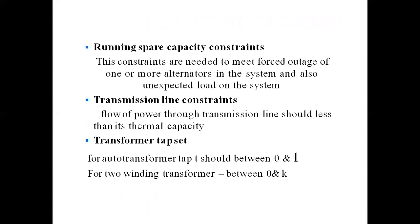There are running spare capacity constraints. These constraints are needed to meet forced outage of one or more alternators in the system and also unexpected load on the system. Another is the transmission line constraints — flow of power through the transmission line should be less than its thermal capacity.